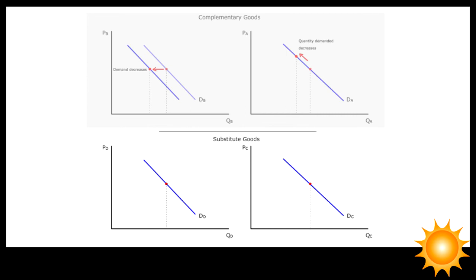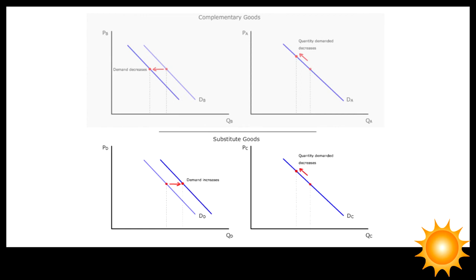A price increase in good C, on the other hand, will lead to a decrease in quantity demanded of good C, and an increase in demand for good D.